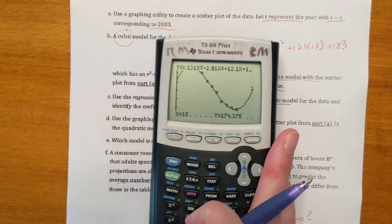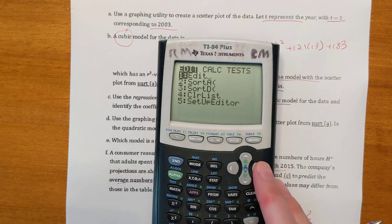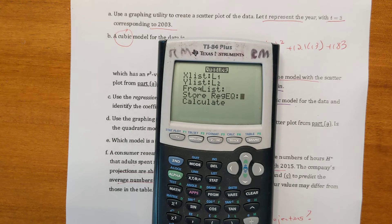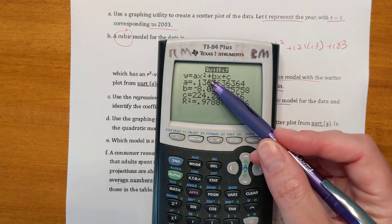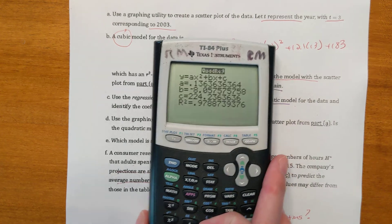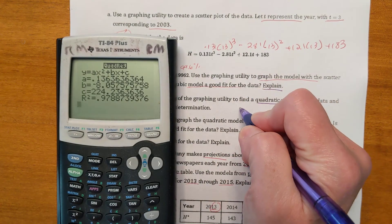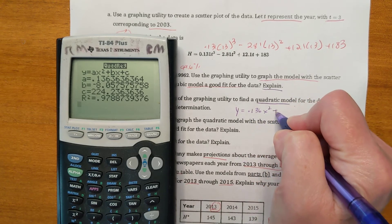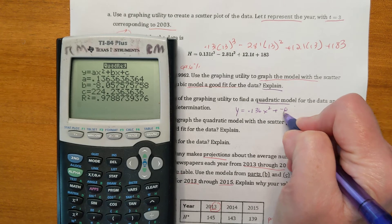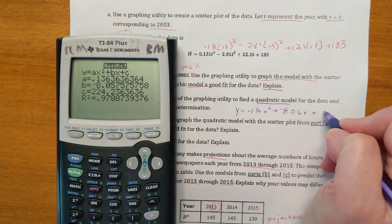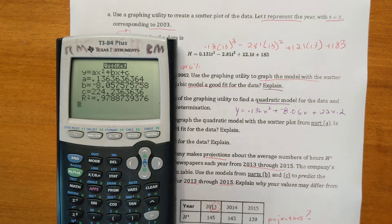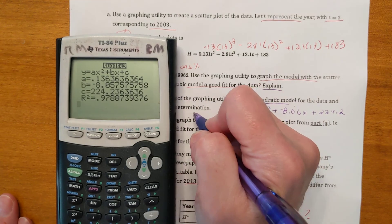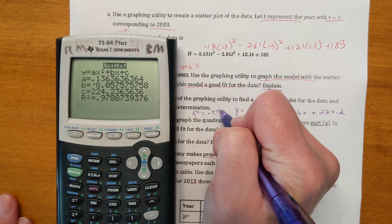Go back to stat, calculate. This time we want choice five, quadratic model, hit calculate. It gives us our a, b, c, and the r value. So I got for our quadratic model here, y equals 0.136x squared plus negative 8.06x plus 224.2. And the r squared value is 0.978.